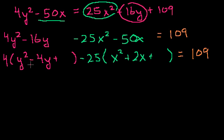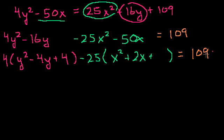For the y terms, I have minus 4. I take half of that, which is minus 2, and minus 2 squared is plus 4. I can't add something to one side without adding it to the other. I didn't add just 4 — I added 4 times 4, because of the factor out front. So I actually added 16 to the left side, so I have to add 16 to the right-hand side as well.